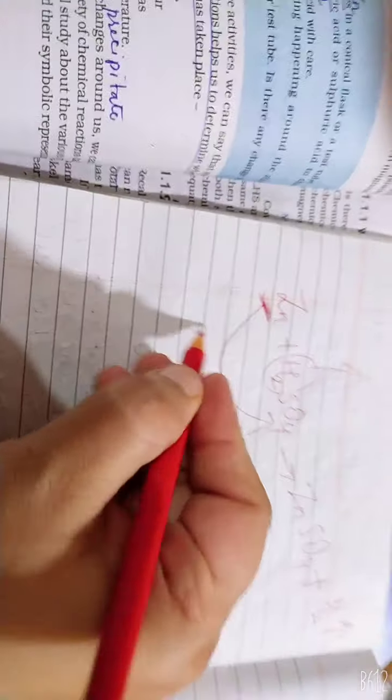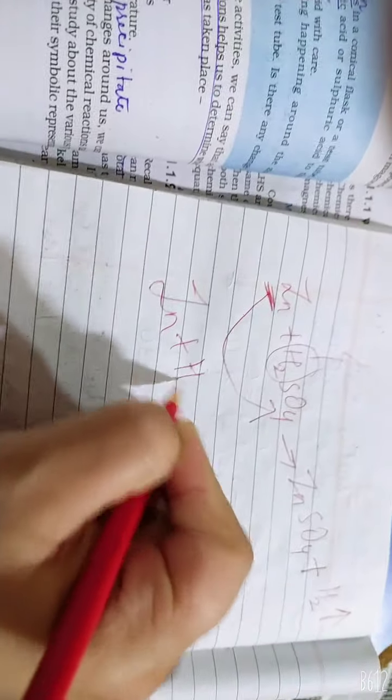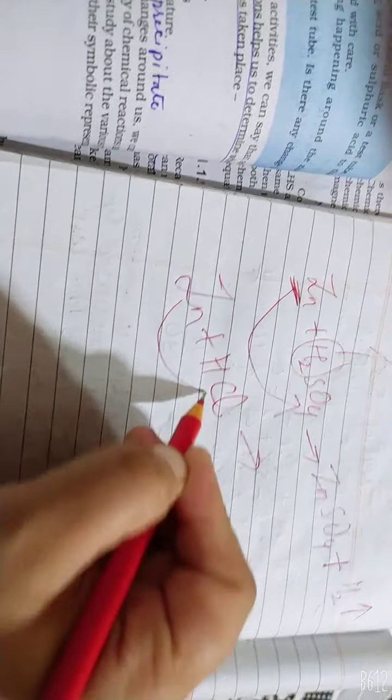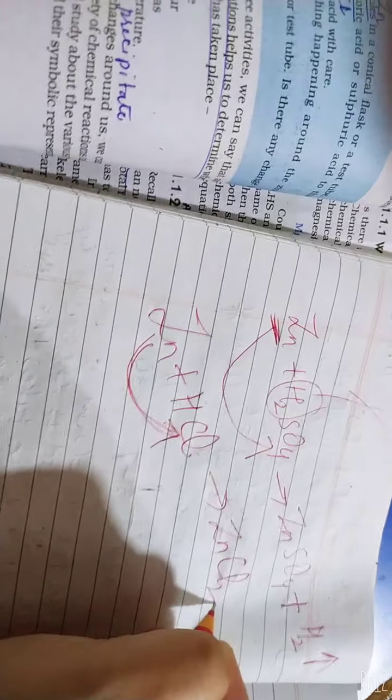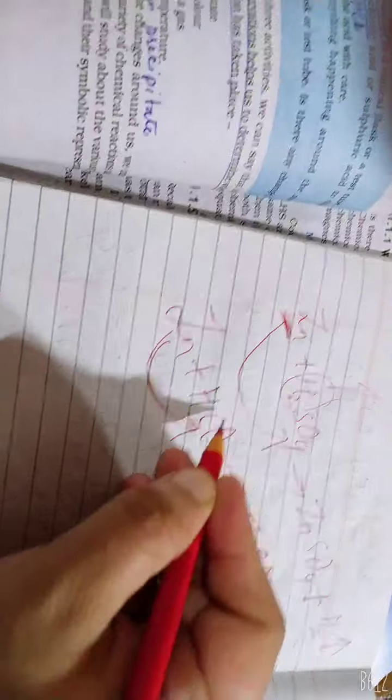Now, if I add HCl acid to it. Zn plus HCl. Then what does it do? Zn is connected with Cl. Then ZnCl2. Then it becomes hydrogen gas.